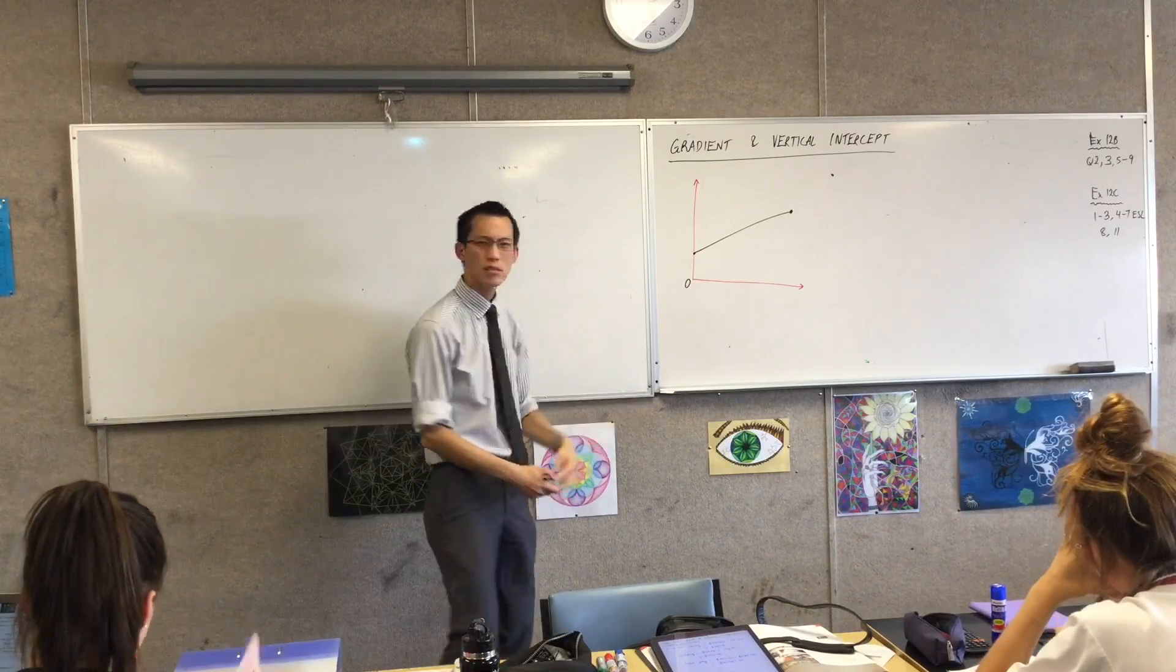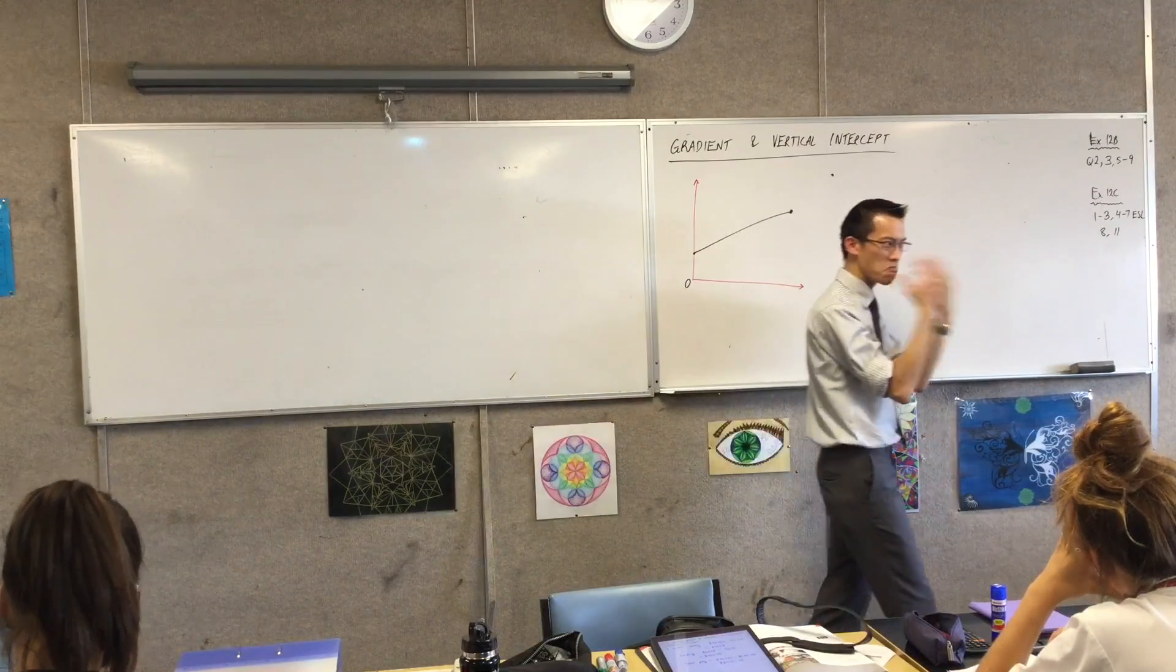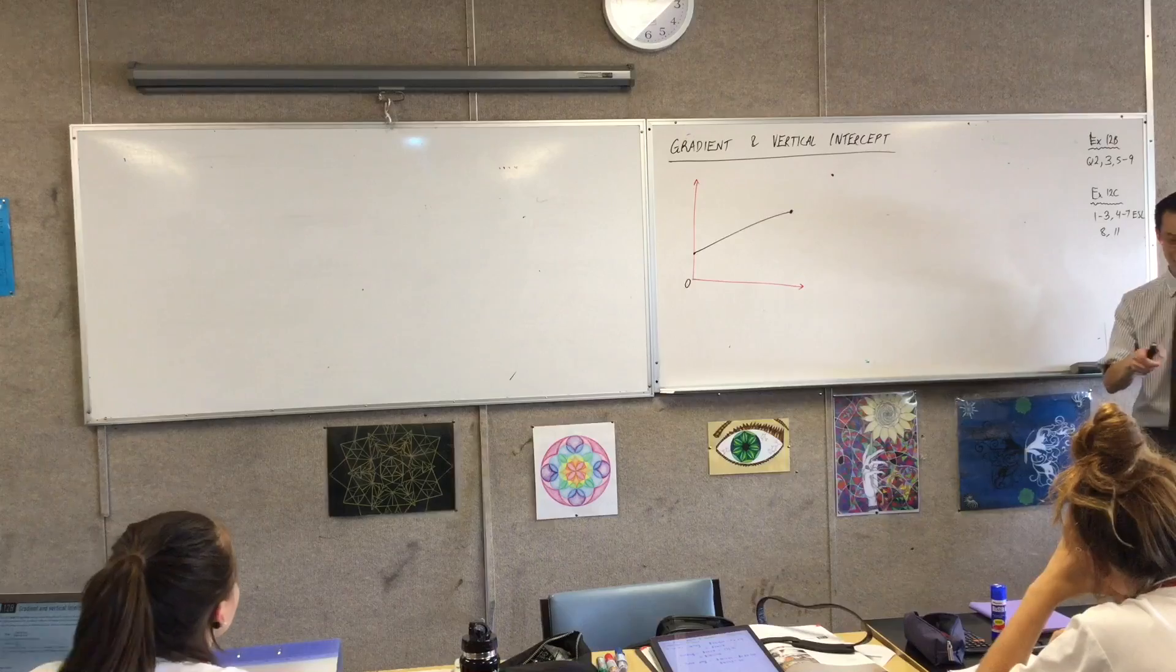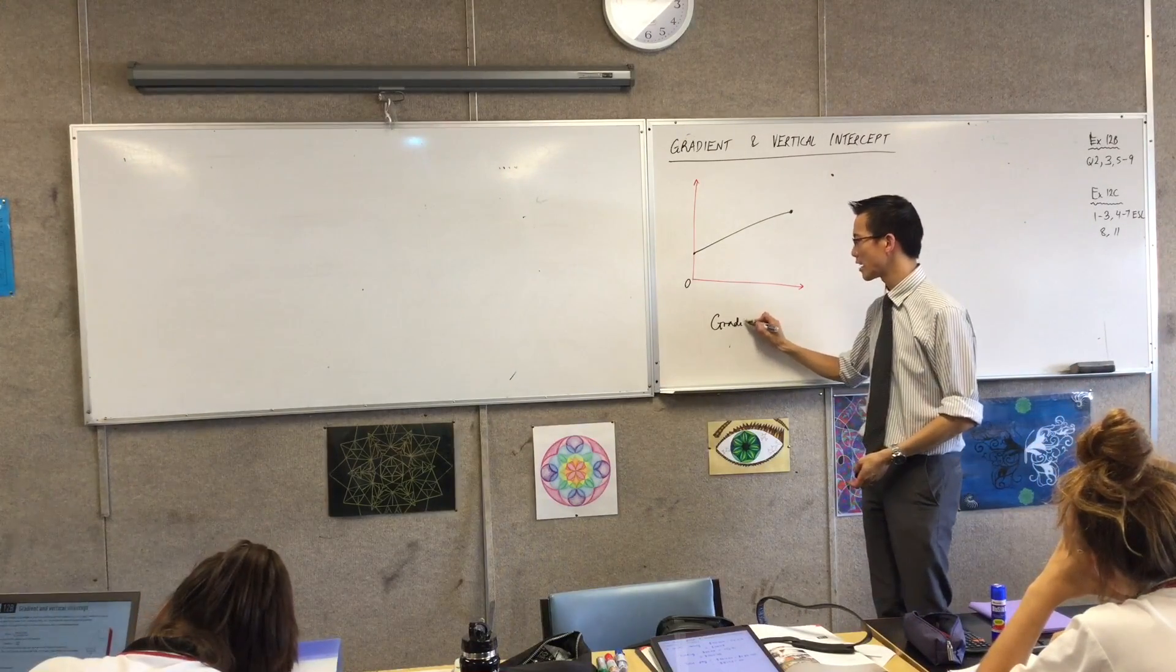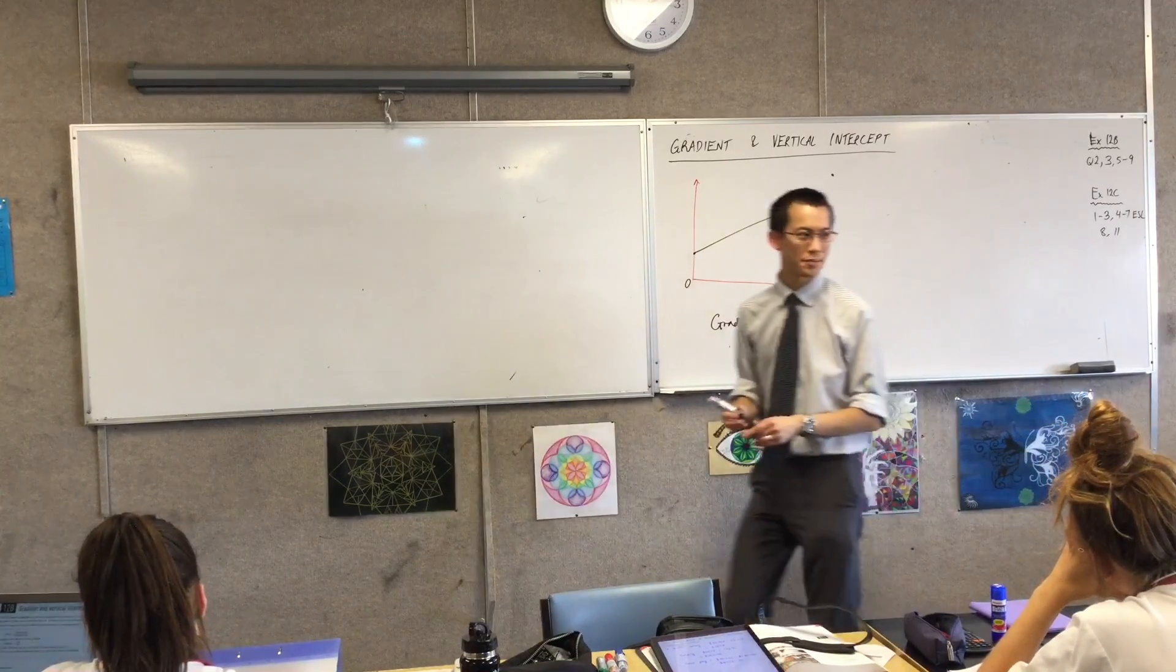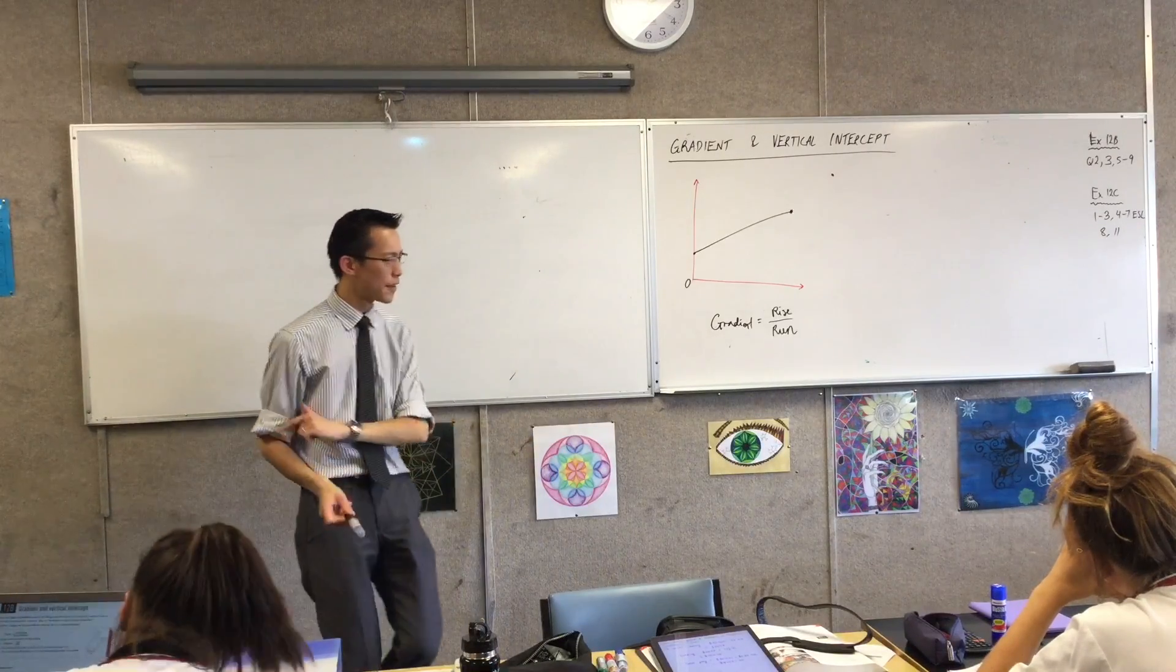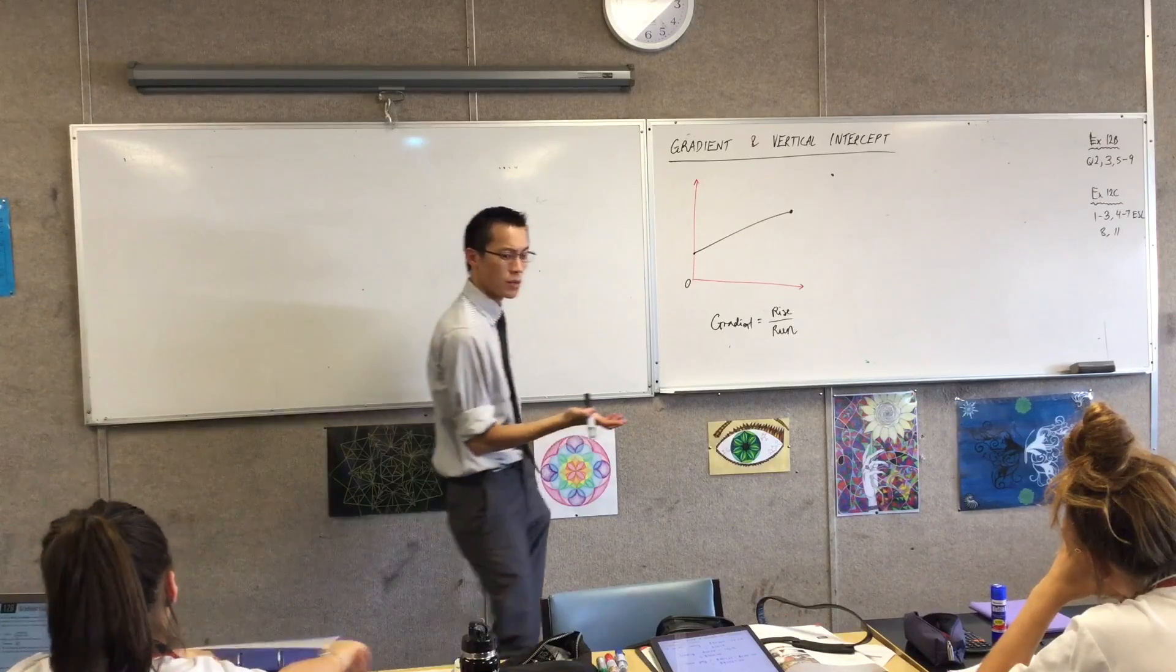So gradient. Can someone give me like a one-sentence explanation of what gradient is? Okay, so the way that we calculate gradient is this nice, easy-to-remember, alliterated fraction: rise over run. That's good, we're going to refer to that in a second. However, it doesn't tell us what gradient is, like what it means. Anyone want to advance on that?